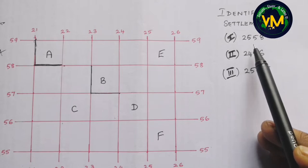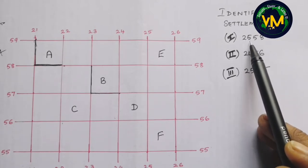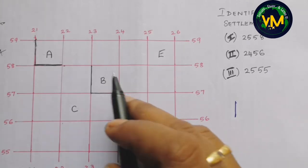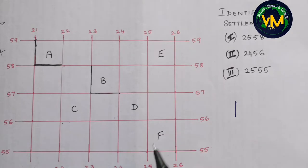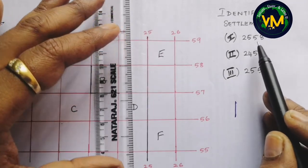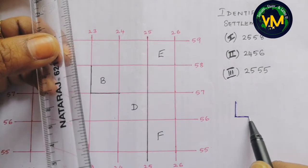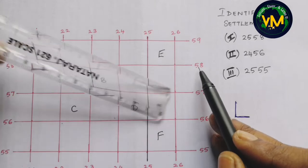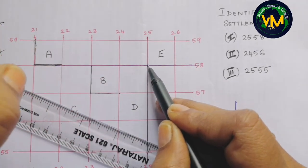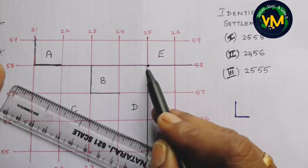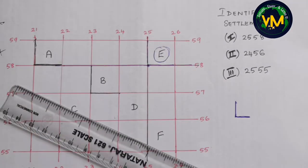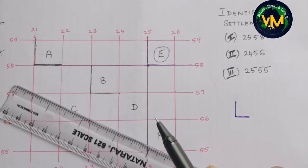Let's follow the L method for 2558. The first two digits — 25 — will be the vertical line (easting). Let's find which is line 25. With 25 as the vertical line and 58 as the northing, find the point of intersection of 25 and 58. So this is our L and this is the square. This is the settlement in grid 2558.